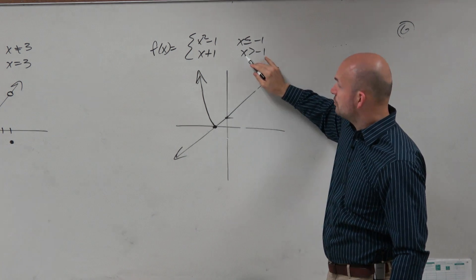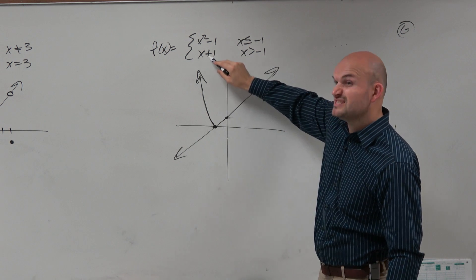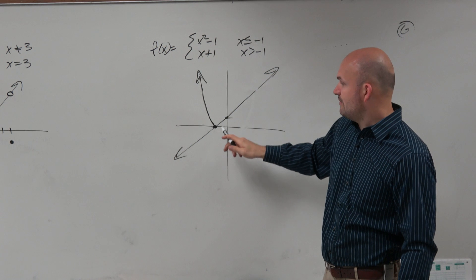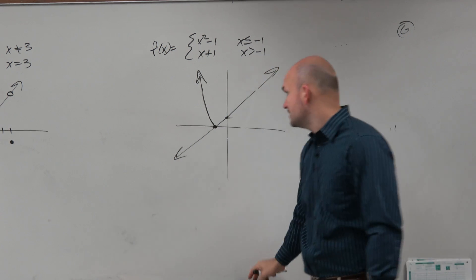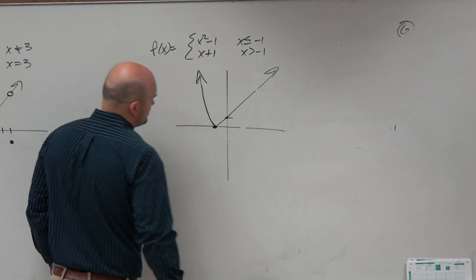This function is only defined for x values that are greater than negative 1. Well, at negative 1, what do I have? 0, right? So anything to the right here is going to be defined, except for at negative 1. However, I don't want to use an open hole, because I already have it defined by the other function. So all I need to do here is just erase.